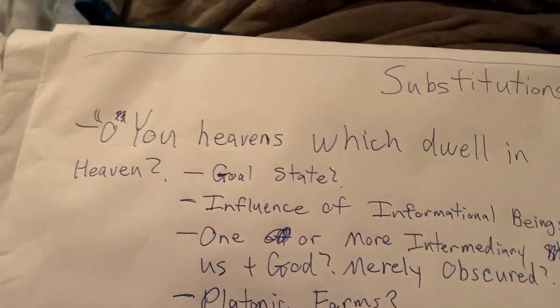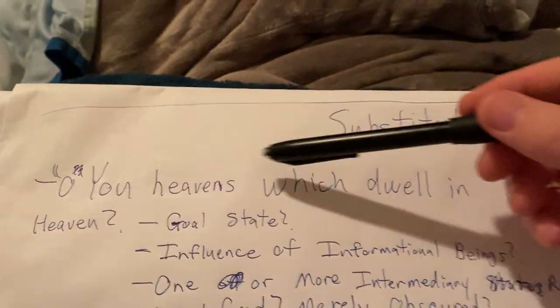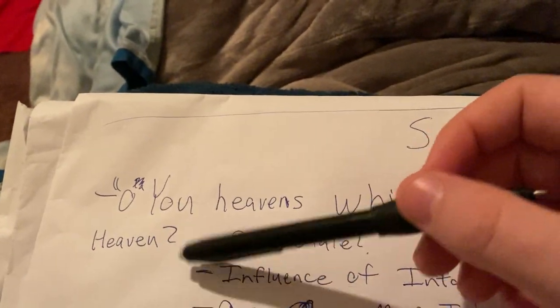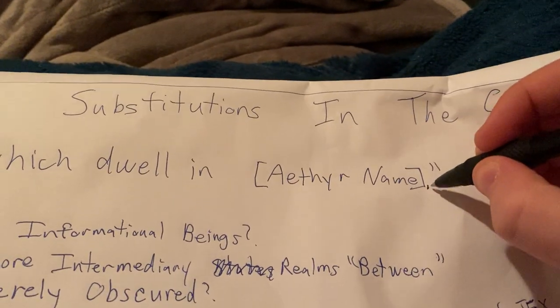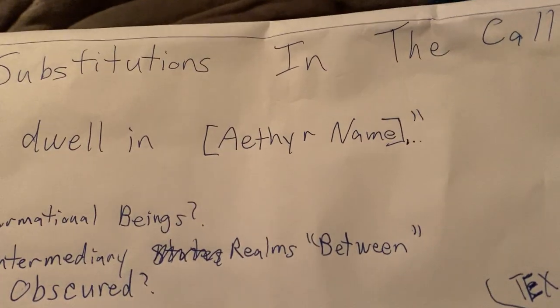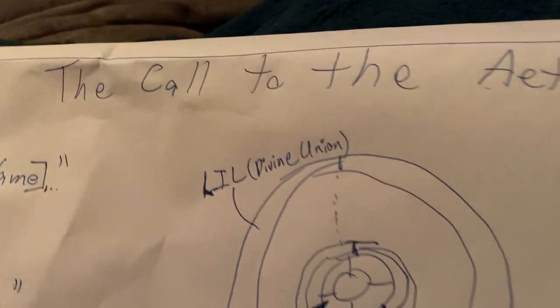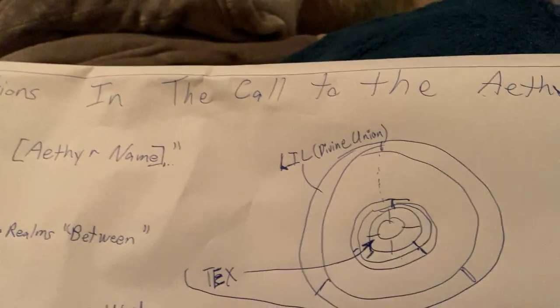Why are we always talking about Enochian and these two dudes when we had a nun do this centuries before? There's a lot of validity to that. So let's just do a quick review of what the call to the aethers is. In English it says, 'O you heavens which dwell in' — then the aether name — and so on. It's a long call; it takes about ten minutes if you're a beginner, under five if you've done it a lot.